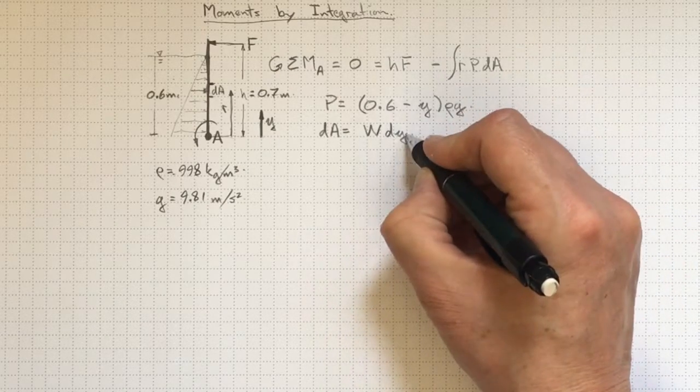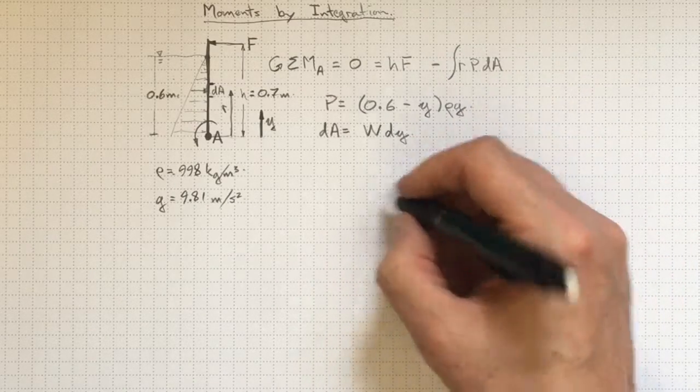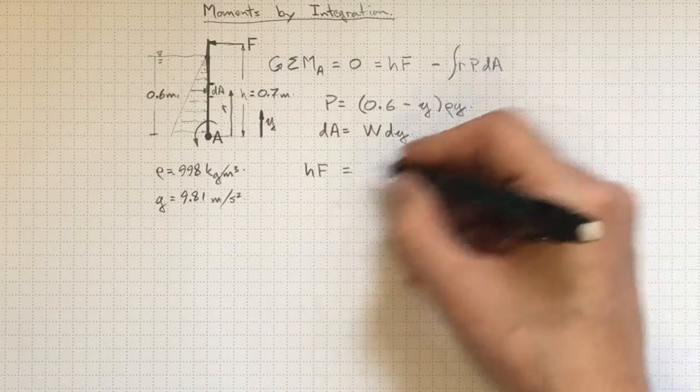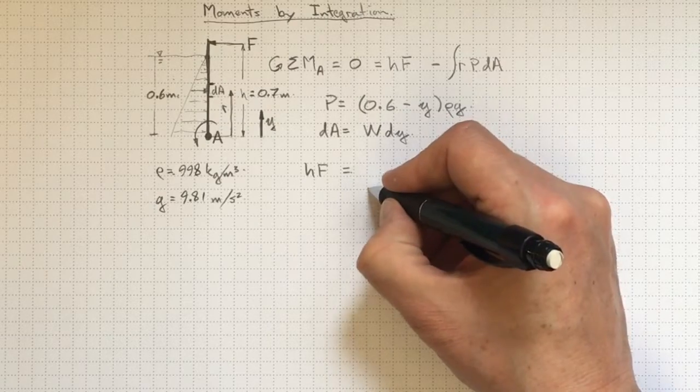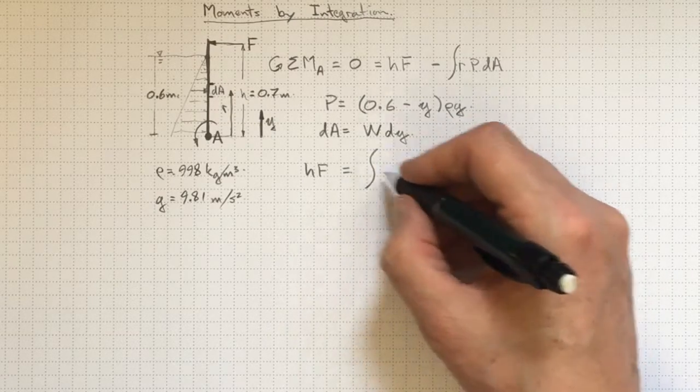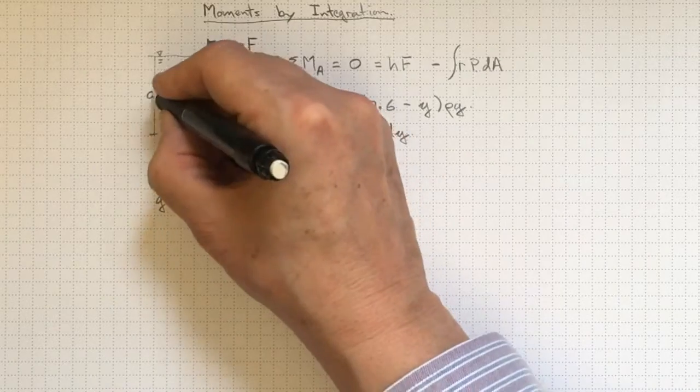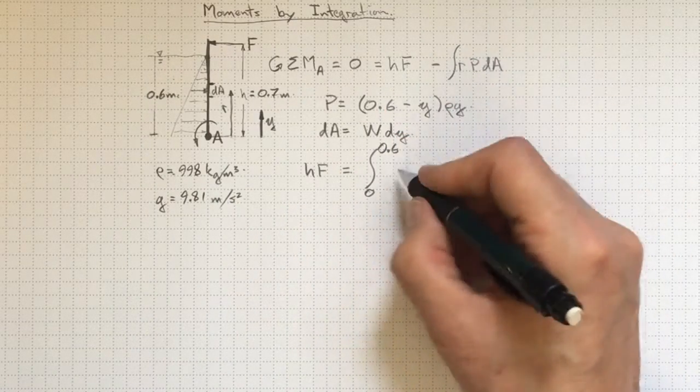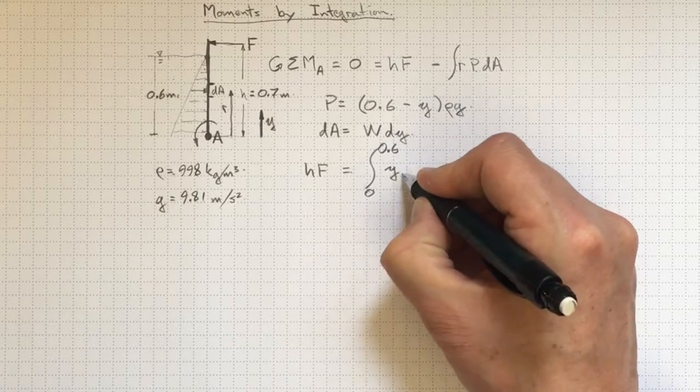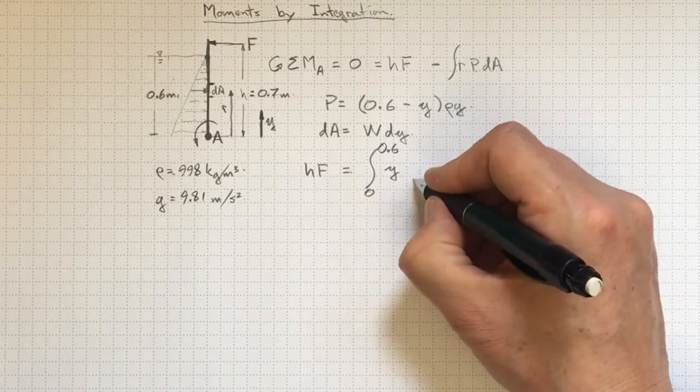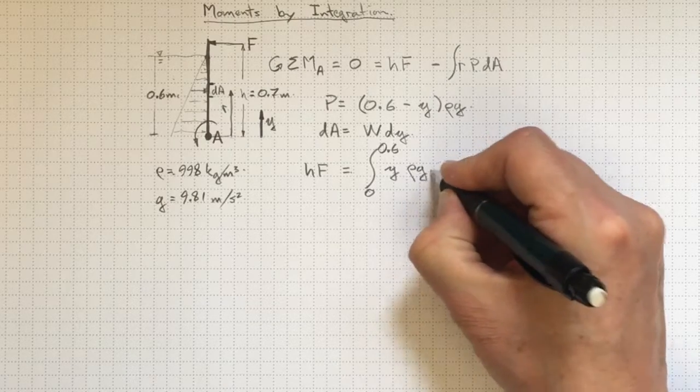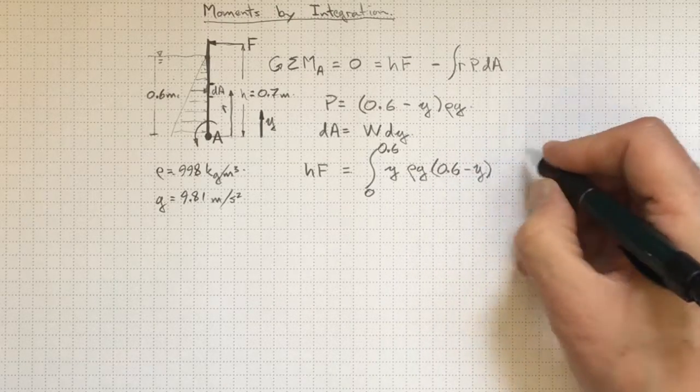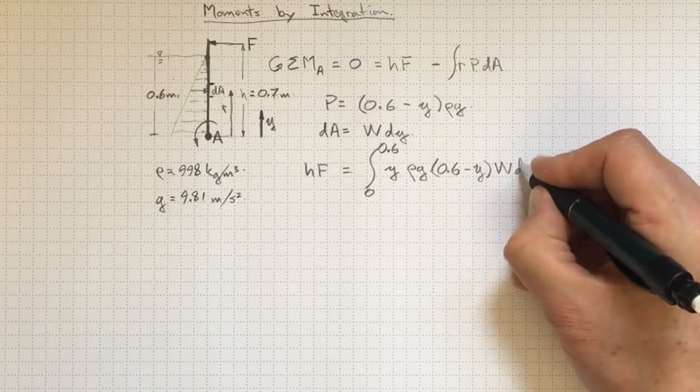And I know that dA is going to have W and dY in it. So I'll wind up with H F equal to, taking this to the other side and losing the negative sign, integral. And I'm going to be going from Y equals zero to Y equals 0.6. And I need R, that's going to be equal to Y. I need P, that's going to be rho g times 0.6 minus Y. I'm going to need dA, that's going to be W dY.